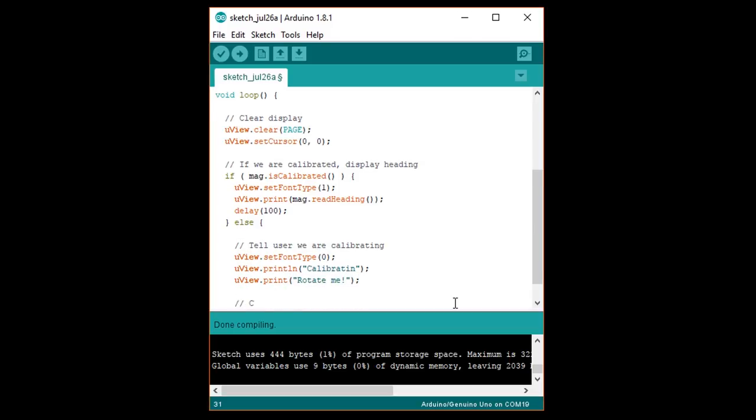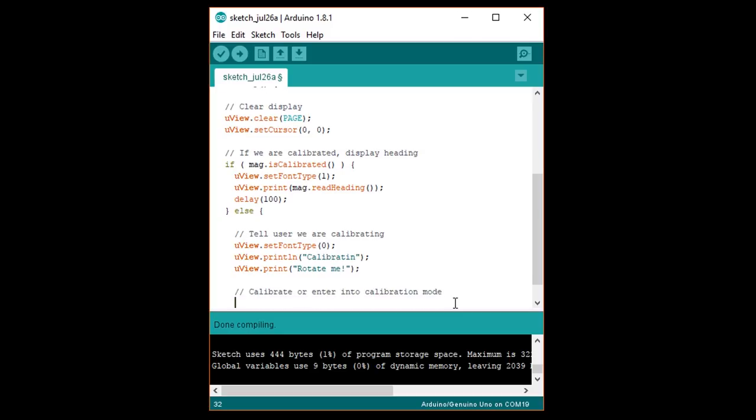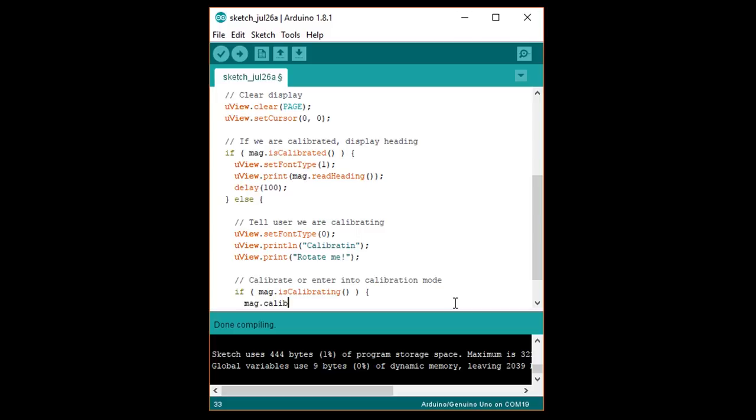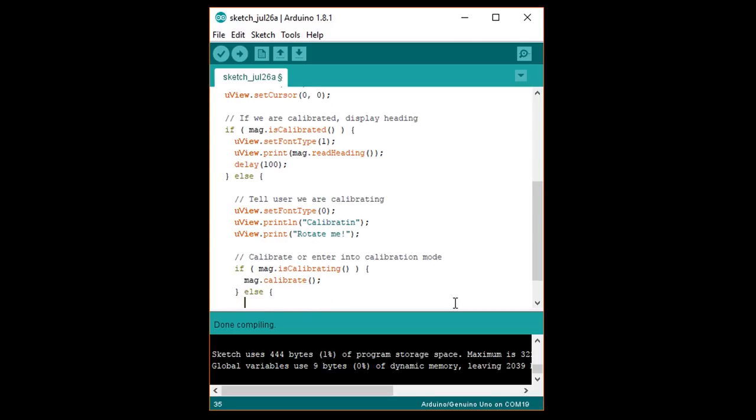Under that, slash slash calibrate or enter into calibration mode. If, open parentheses, mag dot is calibrating, close parentheses, open curly brace, and then mag dot calibrate, follow that with close curly brace else open curly brace, and then mag dot enter cal mode, close curly brace, and then delay 10.